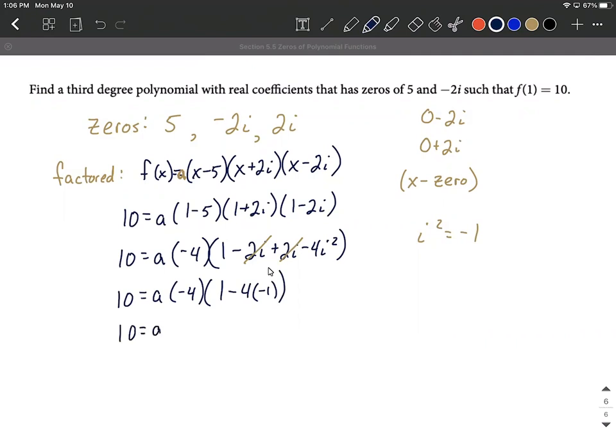So 10 equals a times negative 4. And then this is going to work out to be two negatives make an addition. So 1 plus 4, I'm going to go ahead and say is 5. So we have 10 equals negative 20 times a. Divide both sides by negative 20 to get a all by itself. And we're going to get a is negative one half.